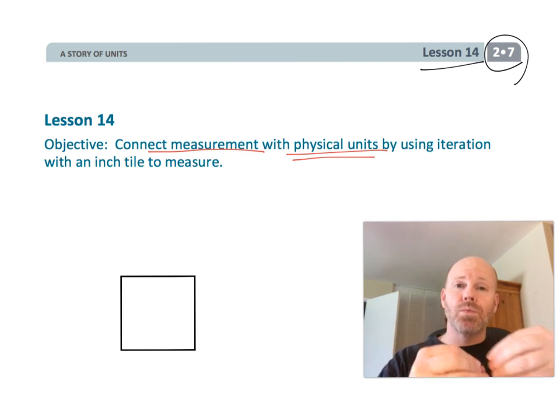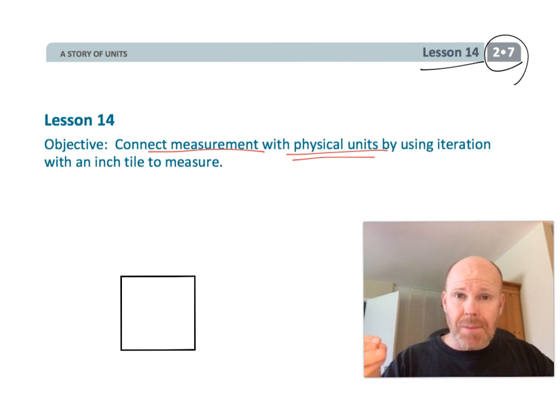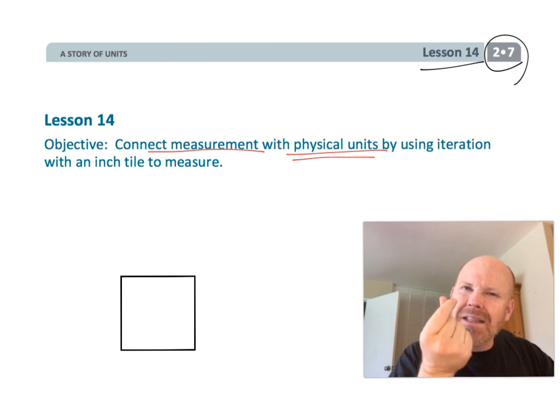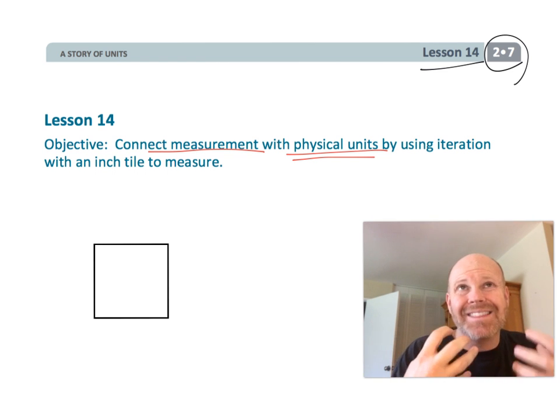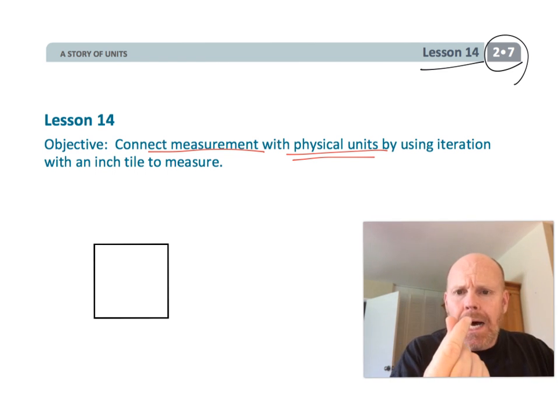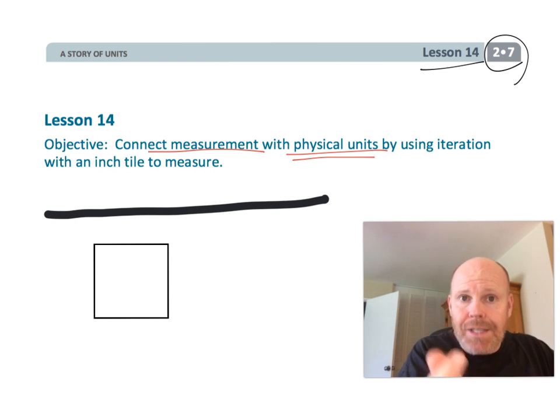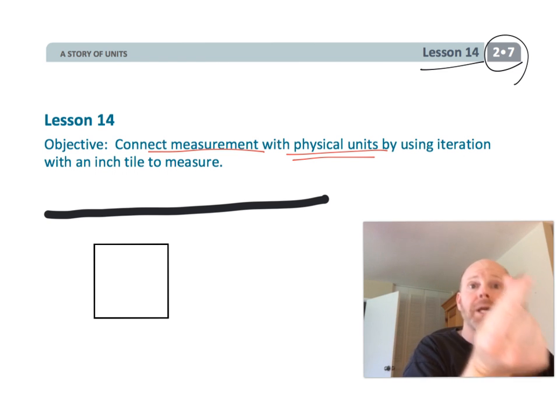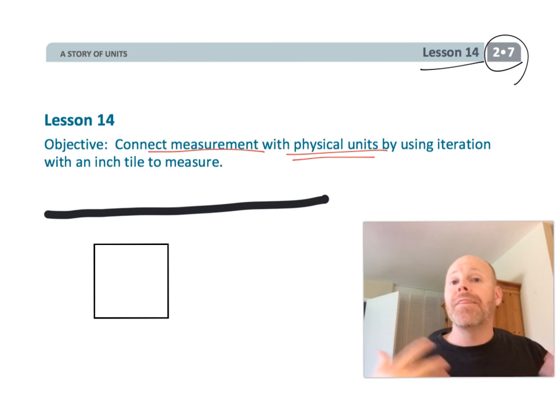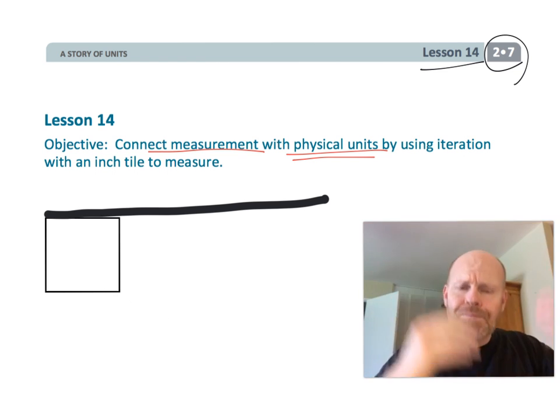So we're not going to be using a ruler to measure something quite yet. Instead we're going to make it a little bit more physical. The idea is more meaningful. We're going to use a square inch and we're going to use that square inch to iterate it. Go inch by inch by inch by inch and then that's how we're going to be measuring things. So let's get started.